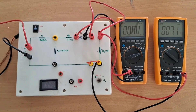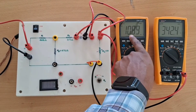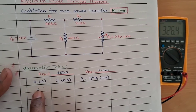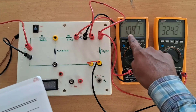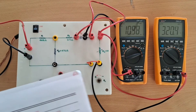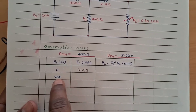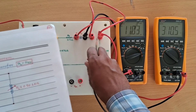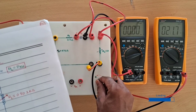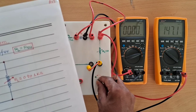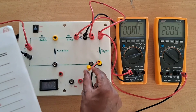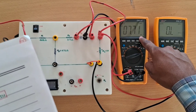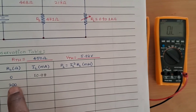Connect the load and start the power supply. The ammeter gives the load current IL at RL = 0 ohms, which is 10.98 milliamperes — note this value. For the next reading at 200 ohms, disconnect the load resistance, change the resistance to approximately 200 ohms, then reconnect. We get 7.71 milliamperes at 200 ohms.